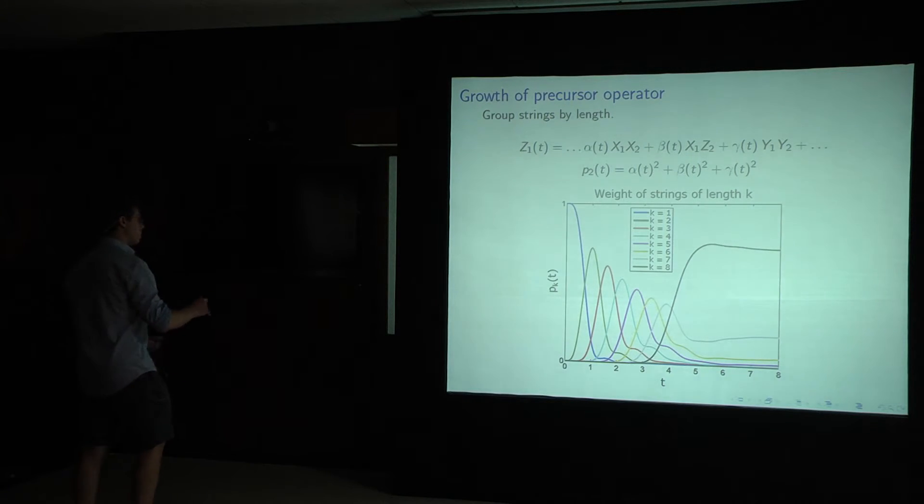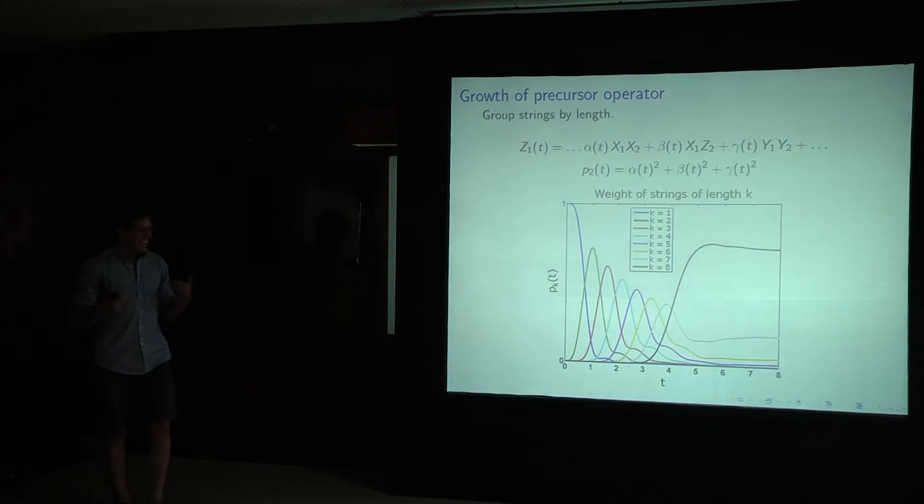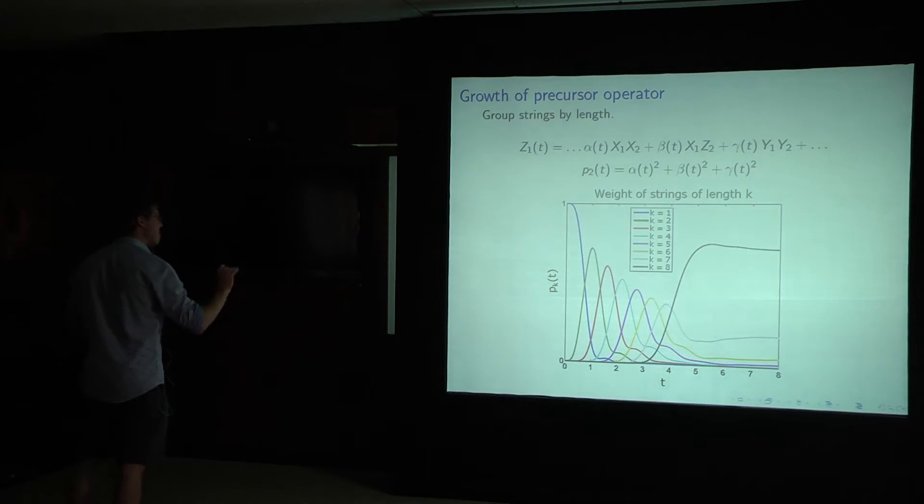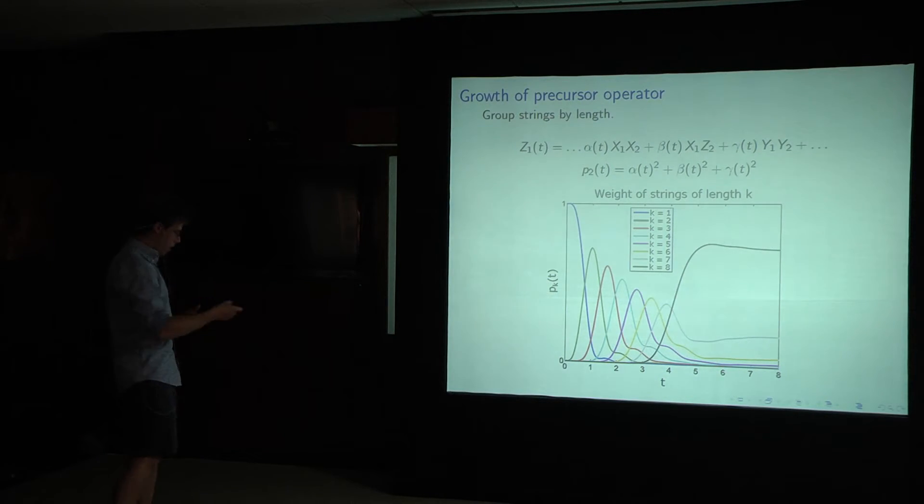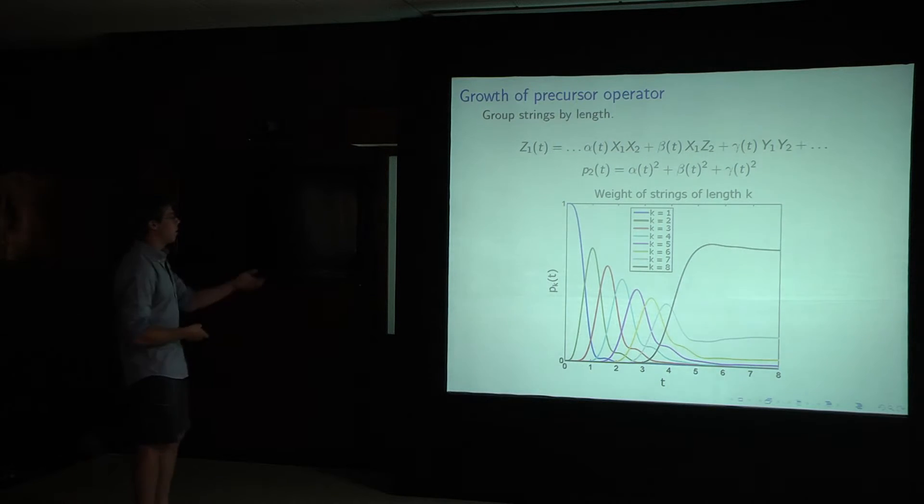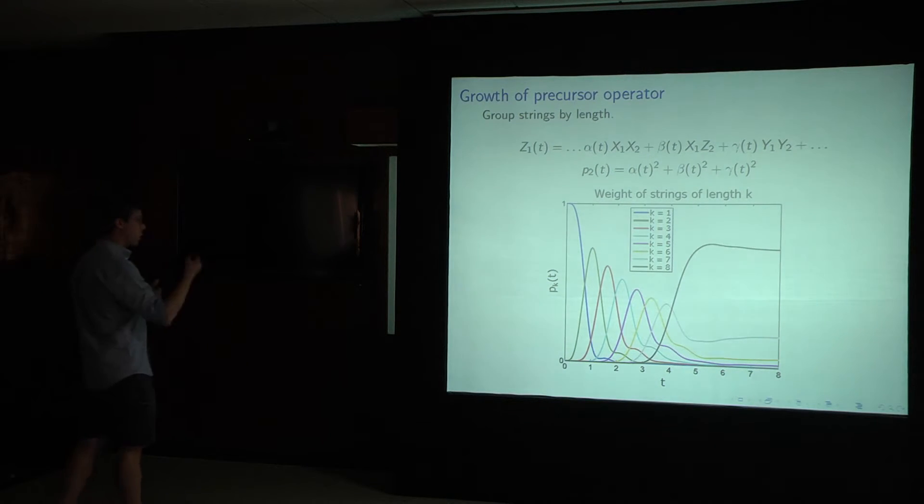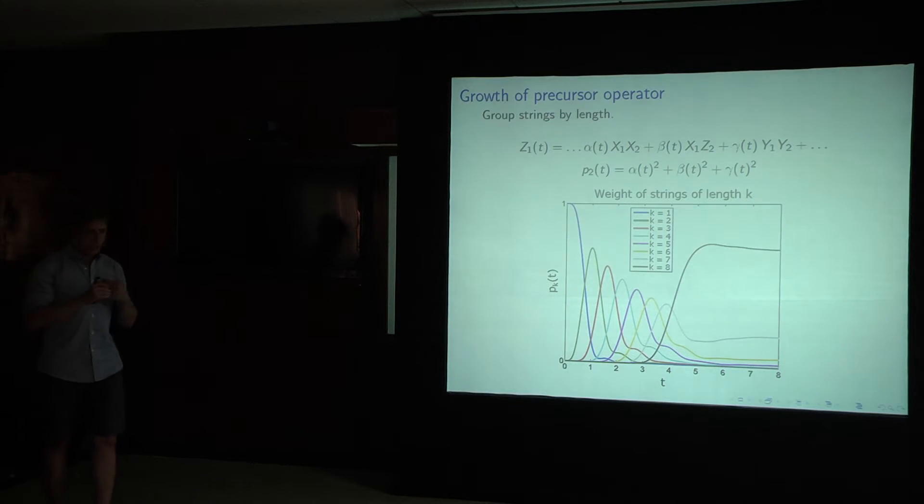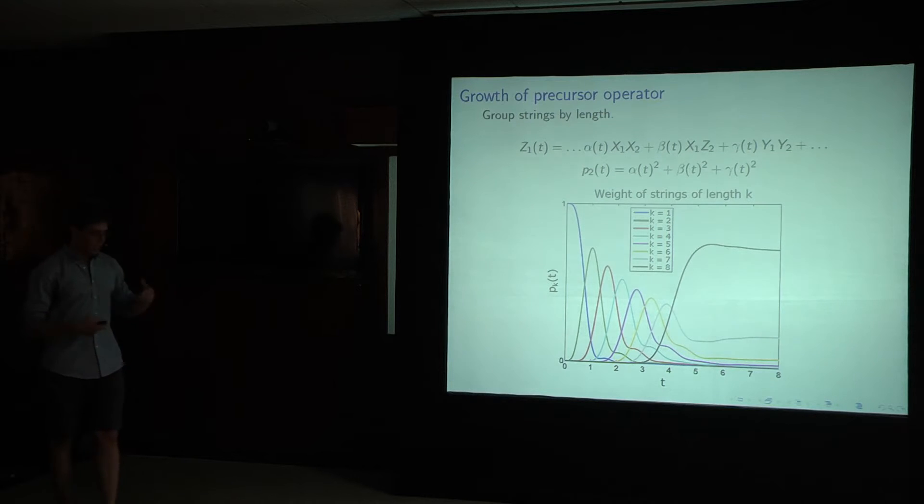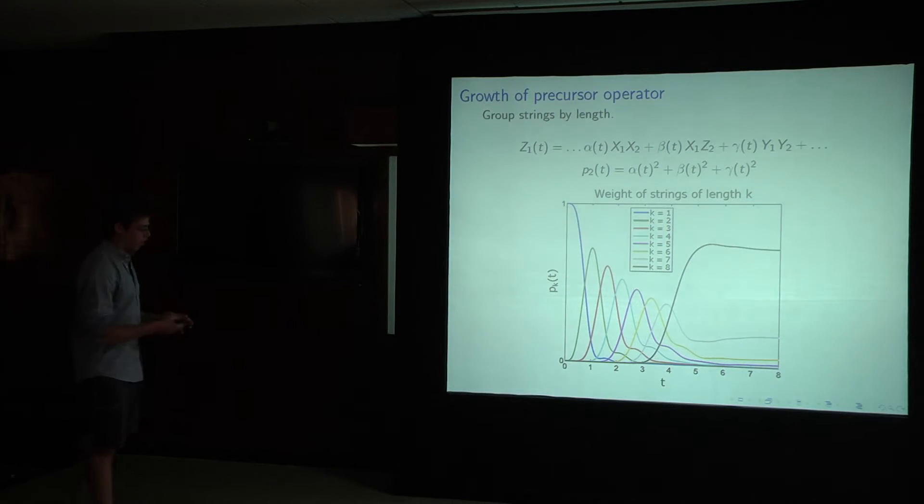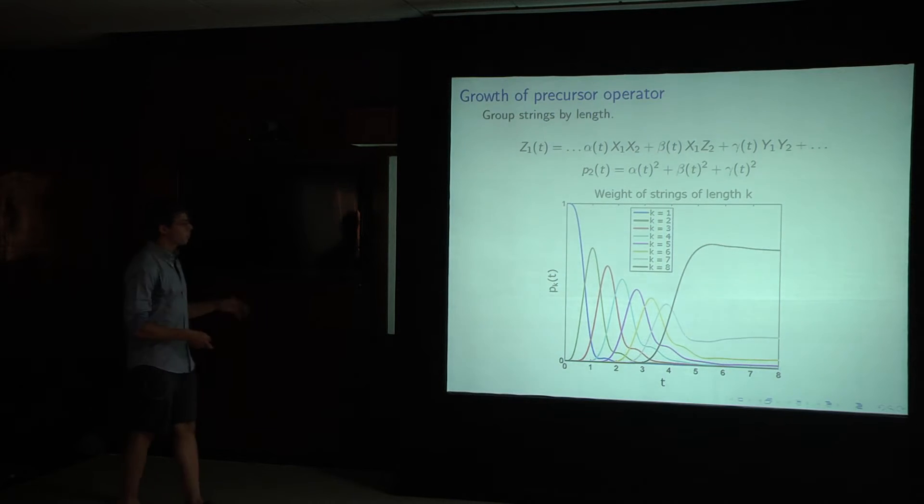And what we see is, well, and using exact diagonalization, using numerical techniques. We start, of course, at t equals 0. It's length 1. And then slowly, as we saw, given our intuition from these nested commutators, we have one of length. As we evolve in time, we see that it exchanges dominance with strings of length 2, 3, and so forth. Oh, I should mention this. This example has a spin chain of length 8. So we see that eventually it's dominated by strings that are of length the entire system. And if I could fit it on this slide, these strings would involve all different combinations of the x, y's, and z's.